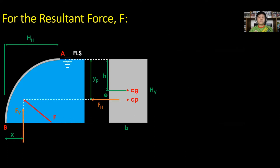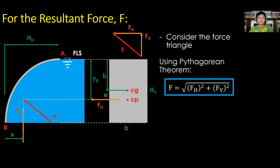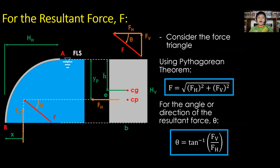For the total force or pressure, the resultant force F — consider the force triangle and apply the Pythagorean theorem. Therefore, F is the square root of the sum of the squares of the horizontal and vertical components. For the direction or angle theta, theta is the inverse tangent of F sub V over F sub H. It is better to present angle theta with respect to the horizontal.